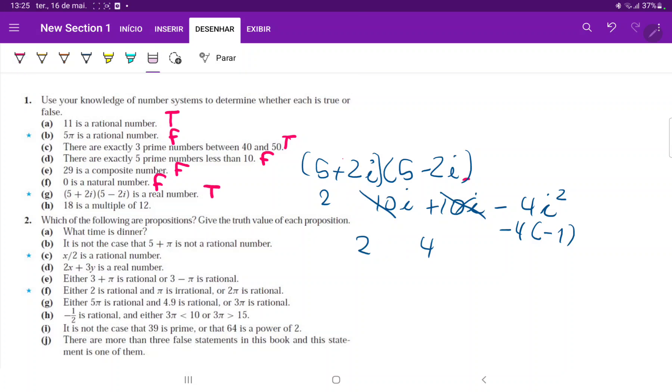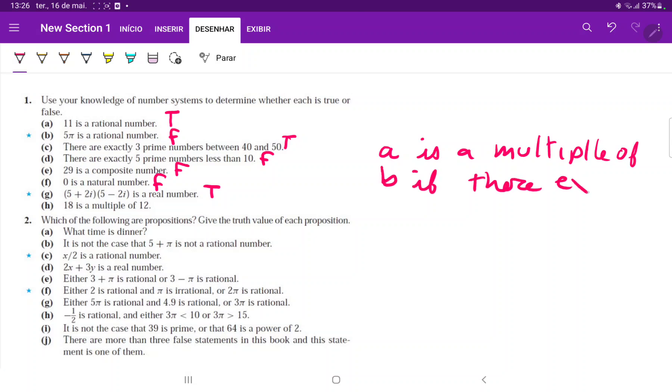And lastly, 18 is a multiple of 12. Well, we do have to remember the definition. So we can say that a is a multiple of b if there exists n such that... oh sorry, I mixed this up. It's the inverse. So a is equal to b times n.